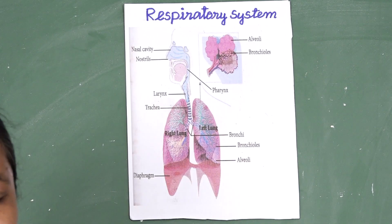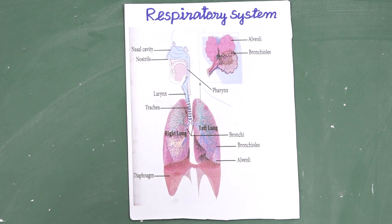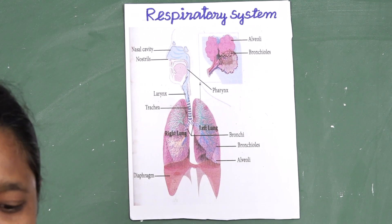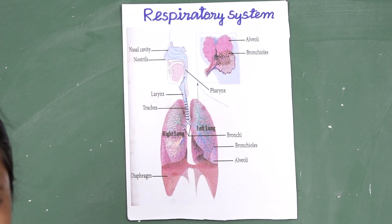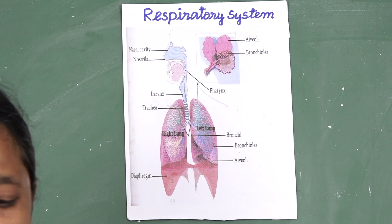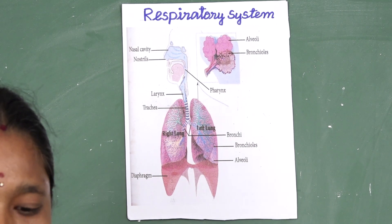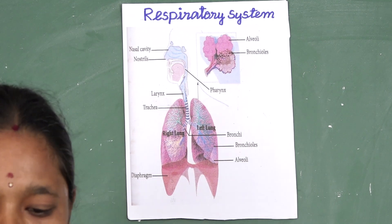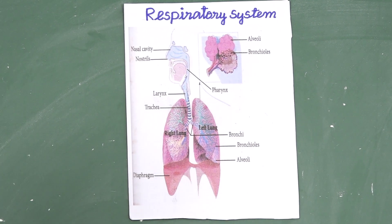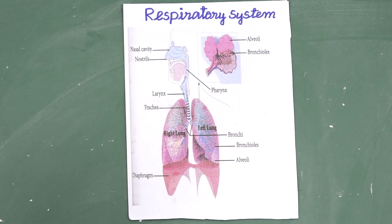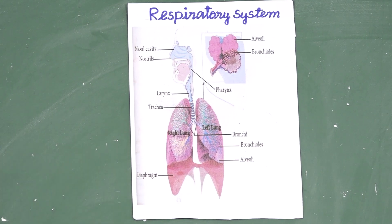How do we breathe? We breathe through our nose. How many lungs do you have? We have 2 lungs. The lungs are the respiratory organs. Now let us learn about the respiratory system.